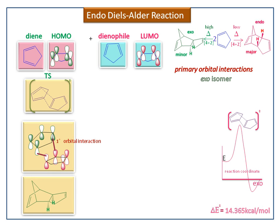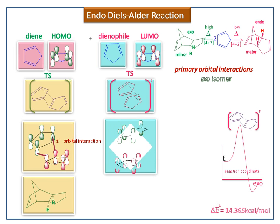Next we see the endo-transition state. This 4π electron system adds with 2π electrons to form a sigma bond by primary orbital interaction. The interaction of additional lobes of the dienophile and back lobes of the diene is called secondary interaction. The secondary orbital interaction leads to the endo-product.